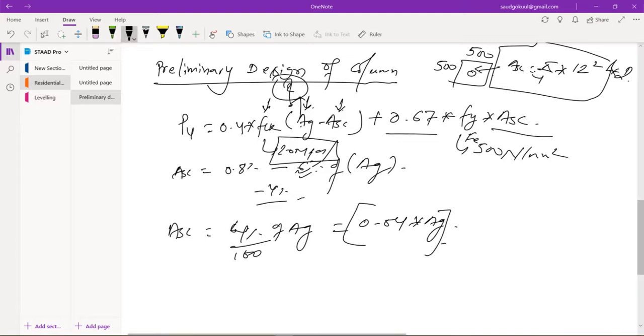What we do in the preliminary design of column is that we find the Pu, that is the ultimate load on that column. We find the ag, that is the gross area, and using this area we find the sizes. So this is the concept of preliminary design of the column.